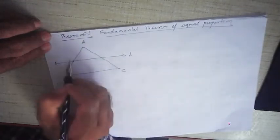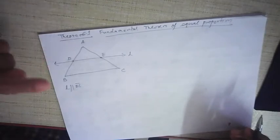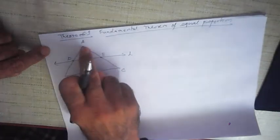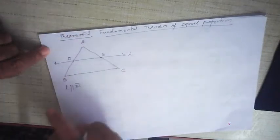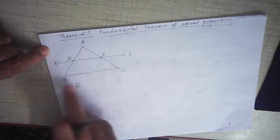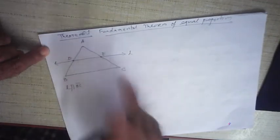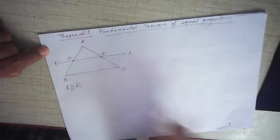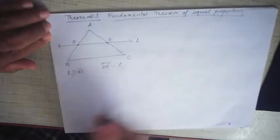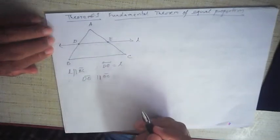Suppose L intersects AB at point D and intersects AC at point E. We know that if a line is parallel to one side of a triangle, then it can intersect the other two sides — provided it does not pass through the vertex. So L is parallel to BC, L intersects AB at D, and therefore it will definitely intersect AC. Let us suppose it intersects AC at point E. So that means line segment DE is parallel to BC.